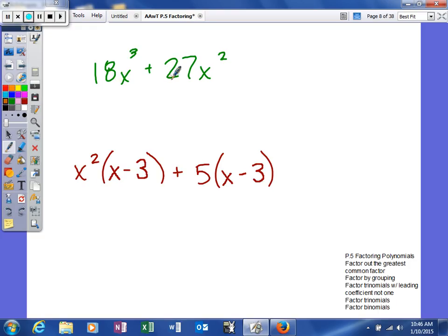In terms of our variables, 18 and 27, both of those are divisible by 9. So, we're going to factor out a 9. In terms of our variables, we have three x's here and two x's here, so we can at least take two x's out of each. To get the remaining polynomial, what we're going to do is take this and divide it into 18. 9 will go into 18 twice, and if we had three x's and took out two, there must be one left.